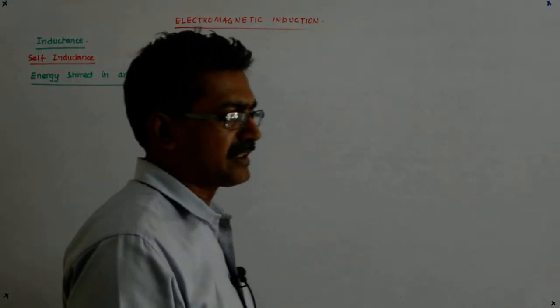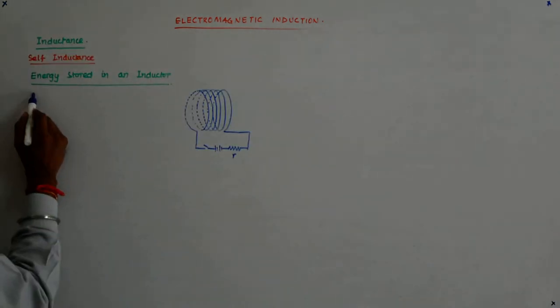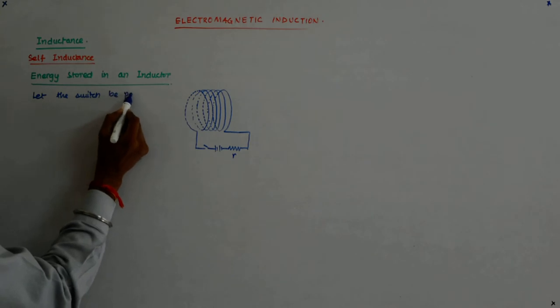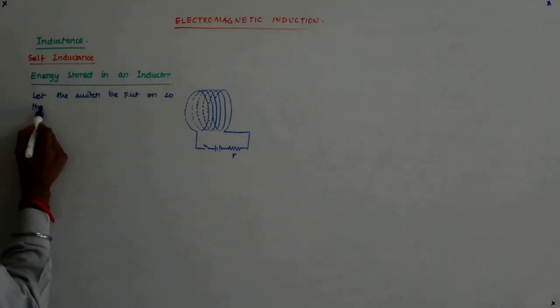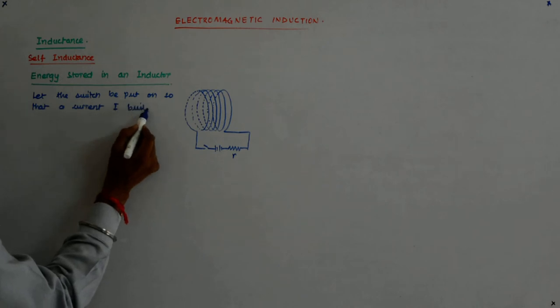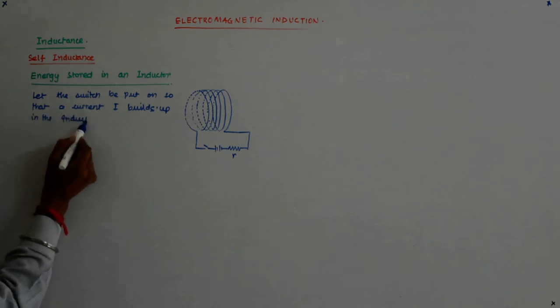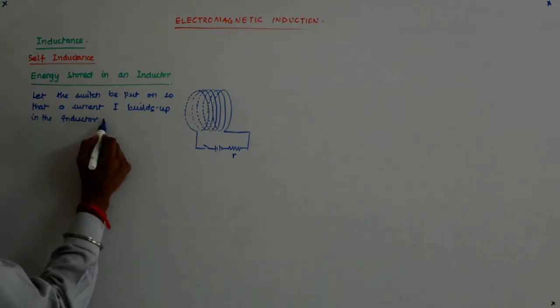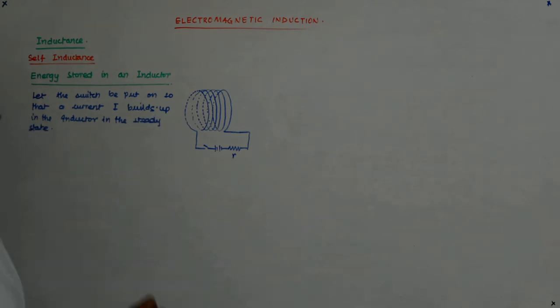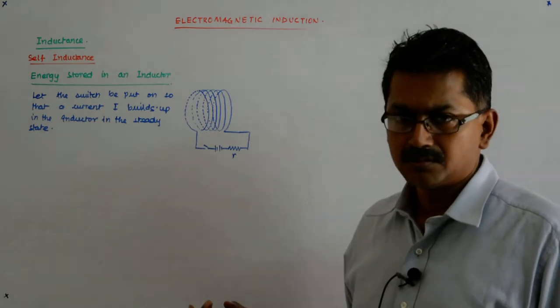So how much energy does an inductor store? Let the switch be put on so that a current I builds up in the inductor, in the steady state. Ultimately, in the end, we have a current capital I that builds up in the inductor.